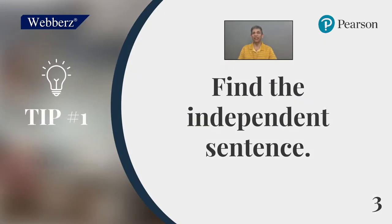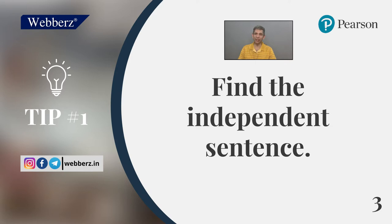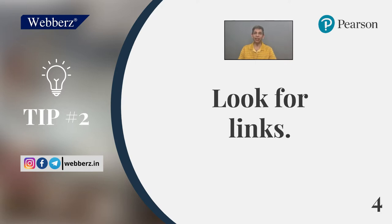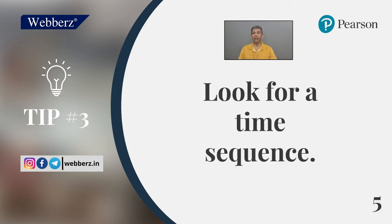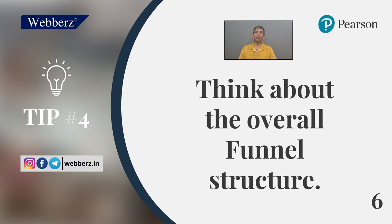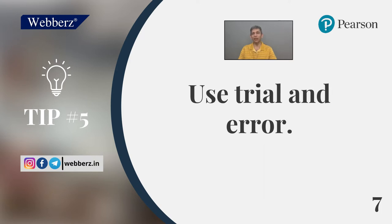So let us learn the tips first. The first tip is look out for the independent sentence, which means the sentence which does not require the support of any other sentence. Second, look for links — I'll teach you how to find links. Third, look for a time sequence: firstly, secondly, thirdly. Fourth, think about the overall funnel structure — I'll tell you what a funnel structure is. Last, use a trial and error method. Remember, this is not writing on the wall which you cannot erase — you can redo it. Till you are satisfied, do not leave it.